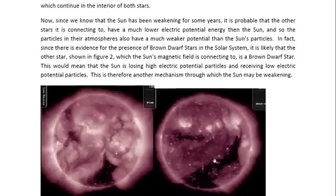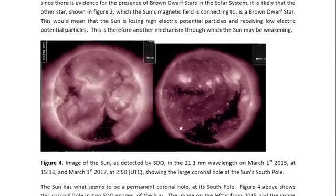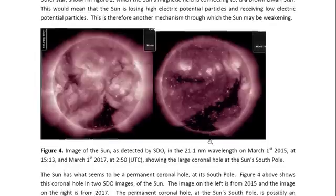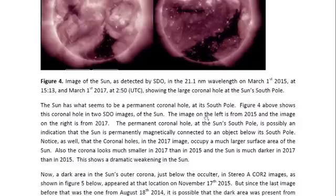Now, the other thing that we need to look at here is the fact that the Sun has a coronal hole at its south pole. And this has been there permanently, it was there already in 2015 and we see it here in 2017. And this coronal hole would therefore suggest that there is an object stationed at the Sun's south pole that is connecting magnetically to the Sun.